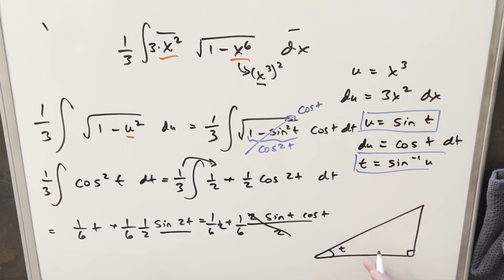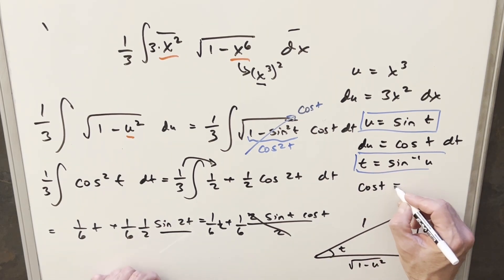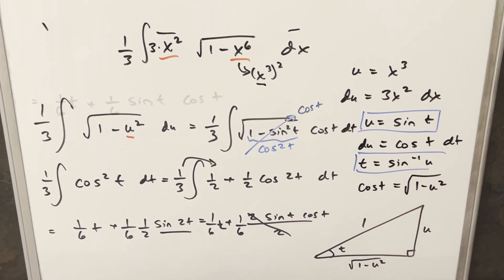Now, if sine of t is u, then we're saying opposite over hypotenuse is going to be just u or u over 1. And then we need to find this third side. We can do that with the Pythagorean theorem. We find this is actually going to be 1 minus u squared. So then for our value of cosine of t, we just want adjacent over hypotenuse. So that's just going to give me square root of 1 minus u squared.